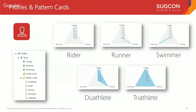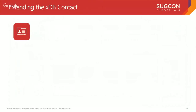I created two more pattern cards to introduce a little intelligence: if we're receiving data about both cycling and running, let's match that user as someone interested in duathlons. And if you do all three, you're superman — you're a triathlete.